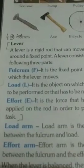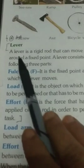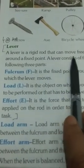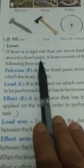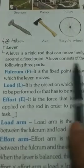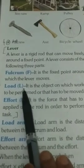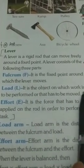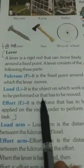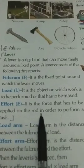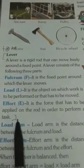Part A: What is a lever? Explain its parts. See page number 78, mark part A. A lever is a rigid rod that can move freely around a fixed point. A lever consists of three parts: Fulcrum - the fixed point around which the lever moves. Load - the object on which work is to be performed or that has to be moved. Effort - the force that has to be applied on the rod in order to perform a task.